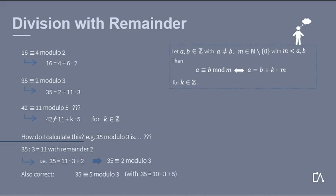Note that it is also correct to say that 35 equals 5 modulo 3. The division with remainder only gives us the smallest positive integer value. Other solutions are also true since they only differ by a multiple.